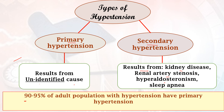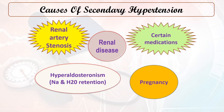According to incidence rate, around 90 to 95 percent of the adult population lives with primary hypertension. The main causes of secondary hypertension are renal artery stenosis, certain renal disorders, medications, hyperaldosteronism, and pregnancies. These are the most common etiological factors that lead to secondary hypertension.